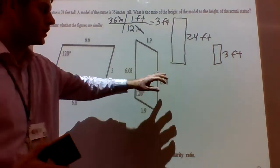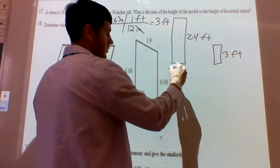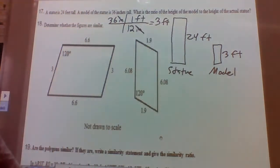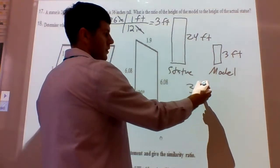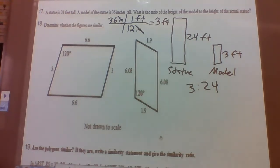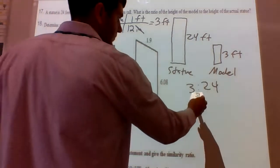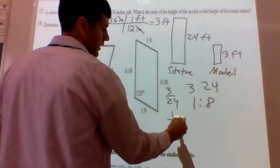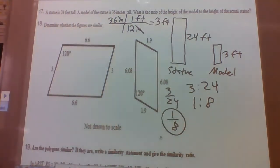So 36 inches is 3 feet. The question asks for the ratio of the model to the actual statue. The height of the model is 3 and the height of the actual statue is 24, so we have 3 to 24, which reduces to 1 to 8. The model is one-eighth the size of the statue, or you can think of the statue as being 8 times the size of the model.